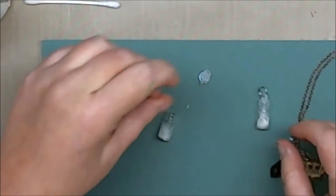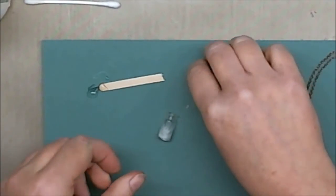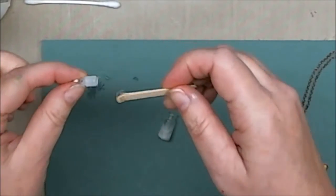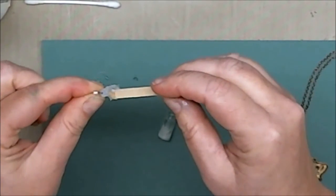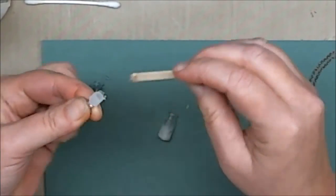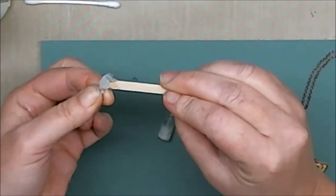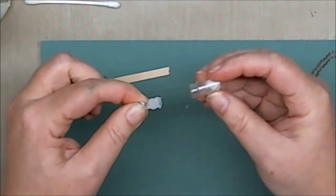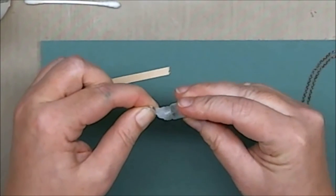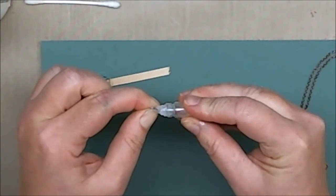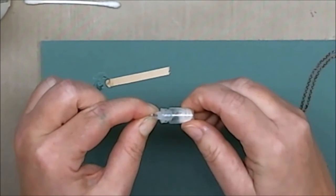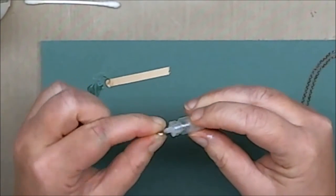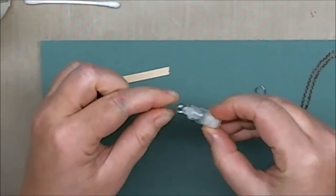Let that cure. It takes about, when I use it metal to wood, usually by an hour I can manipulate it enough to move it somewhere else. So I'm just going to leave this probably for the rest of the day. Get in there. There we go, give it a good twist. And of course it's clear, so it will dry clear. There we go.